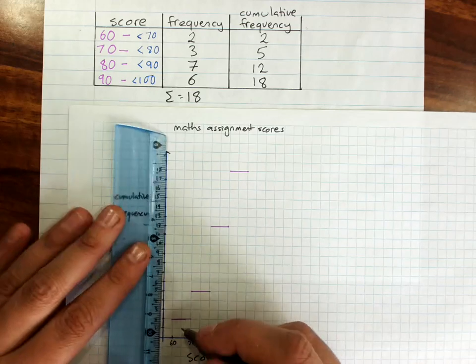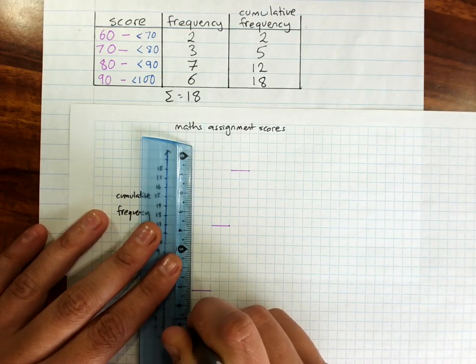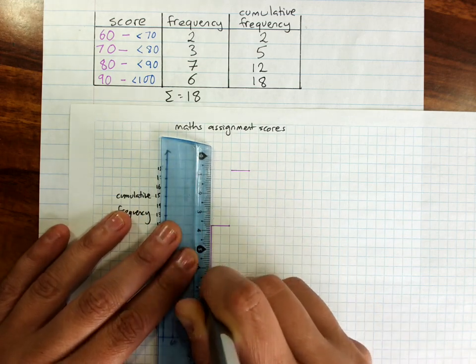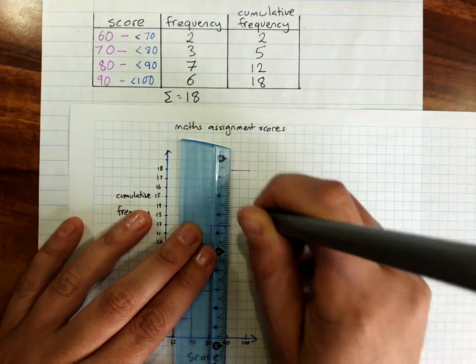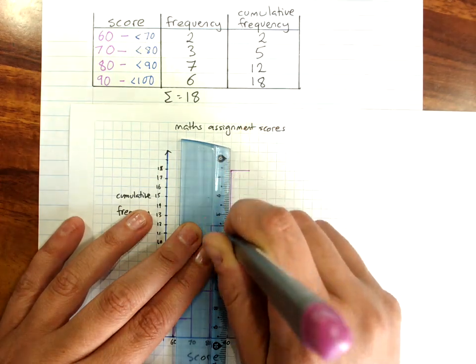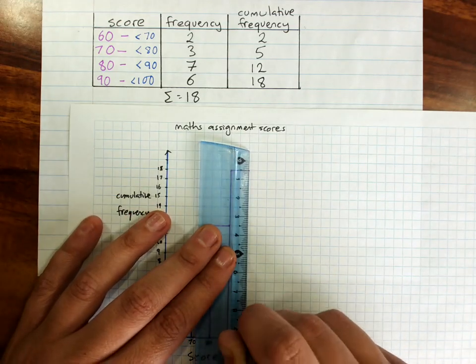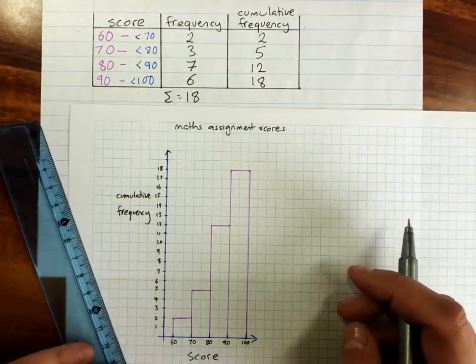You'll notice I'm being really careful using a ruler, making sure I'm staying on the grid lines, because you absolutely must be totally accurate with this. So that is a cumulative frequency histogram.